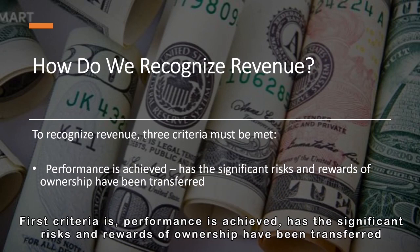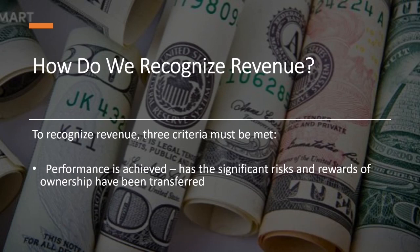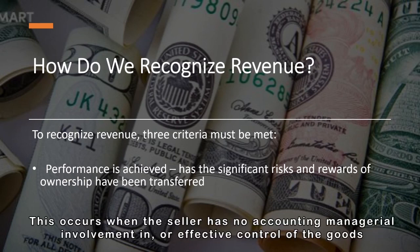The first criteria is that performance is achieved. The significant risks and rewards of ownership must have been transferred. This occurs when the seller has no managerial involvement in or effective control of the goods.